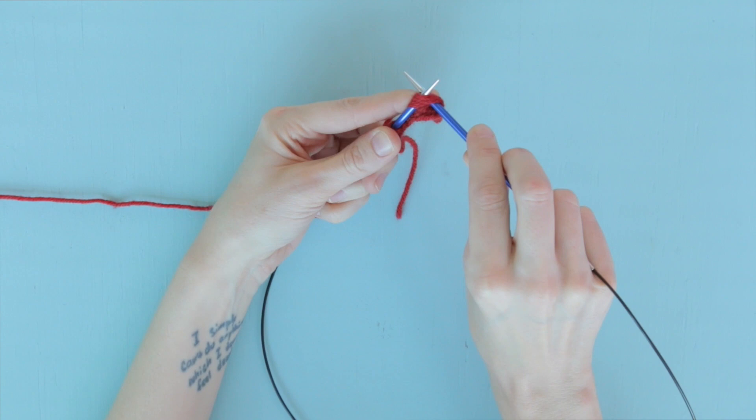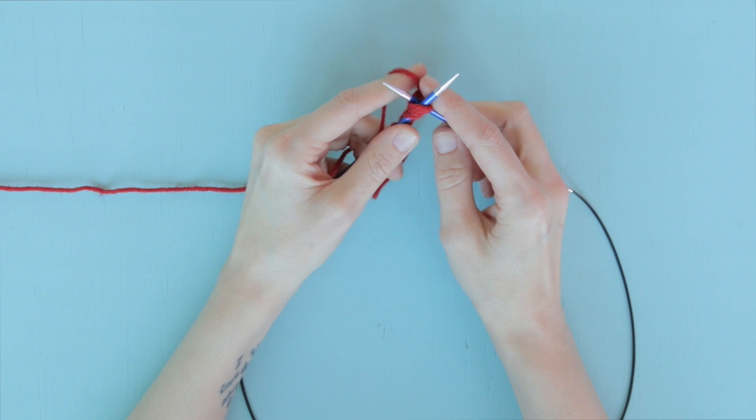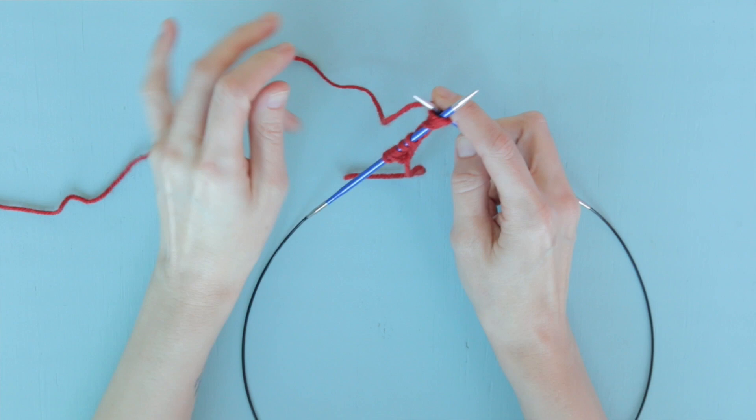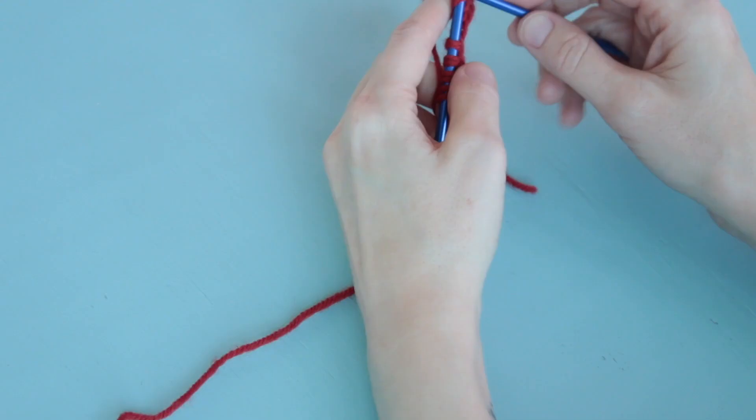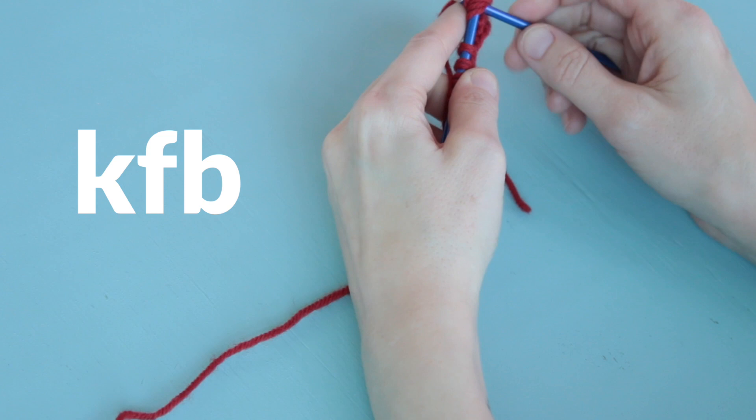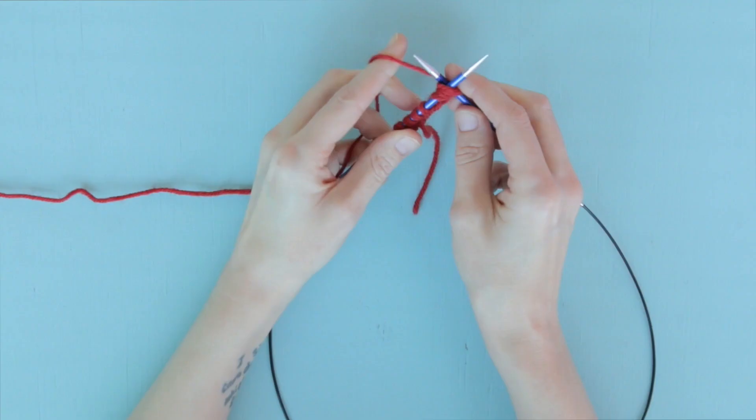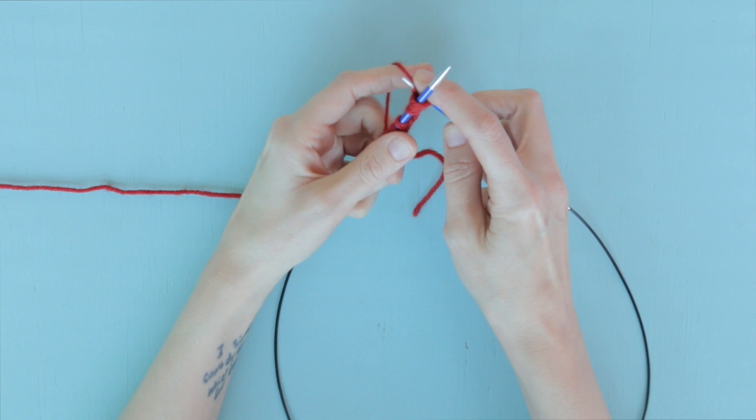Now we're going to do something called a knit four together, purl four together, and we're going to do that twice in these same four stitches. So if you've ever worked a knit front back, which is abbreviated KFB, this action might feel kind of familiar. So we're going to wrap that yarn and draw one loop under these four long loops.